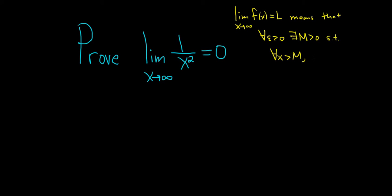f of x gets close to L. So the distance between f of x and L, which is the absolute value of f of x minus L, can be made how small? Smaller than epsilon.